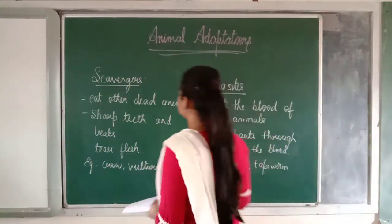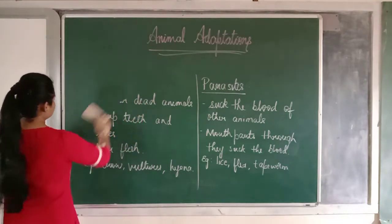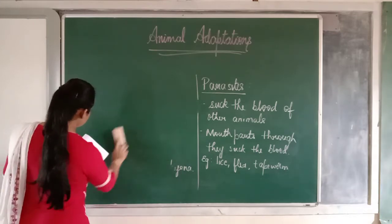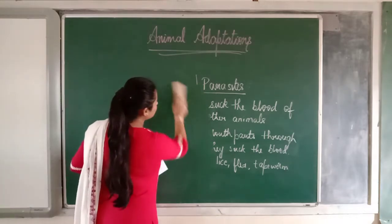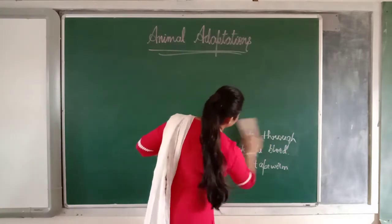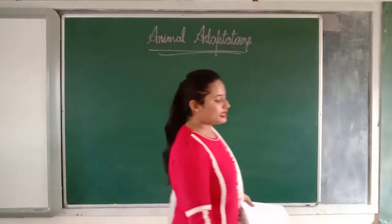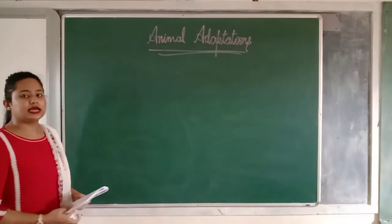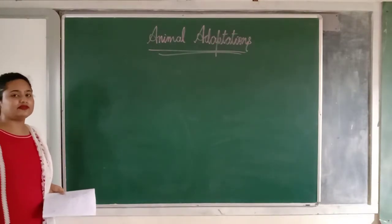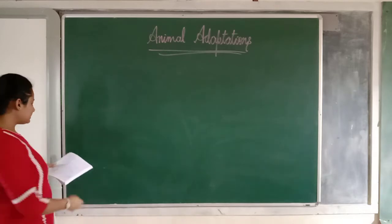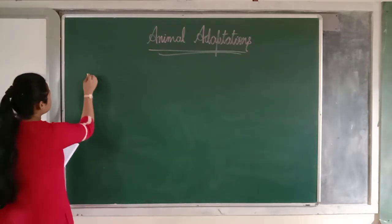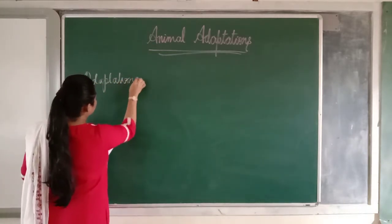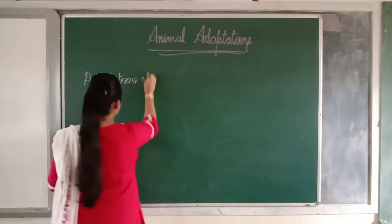Next, let us see adaptations for protection. Different animals have got different body types that help them to protect themselves from other animals. Let us see adaptations of the body.